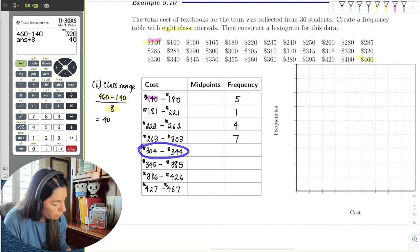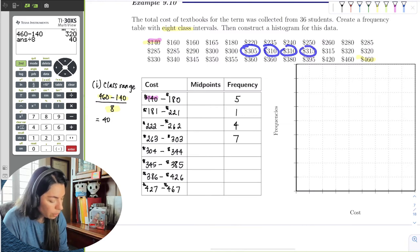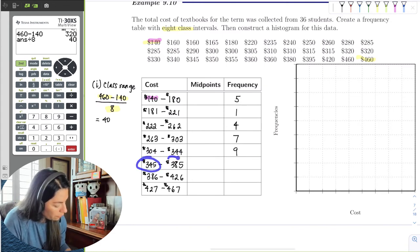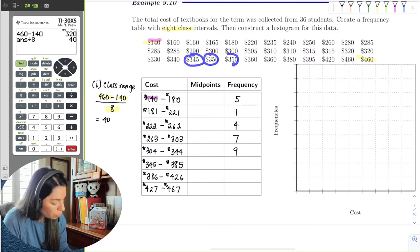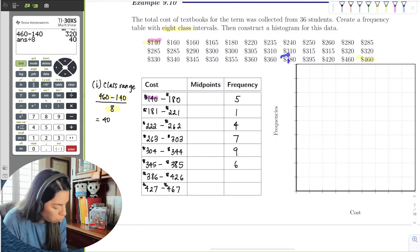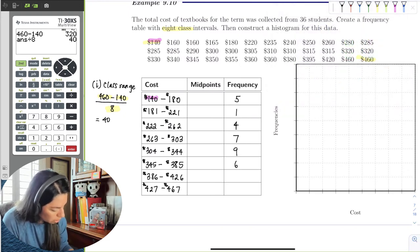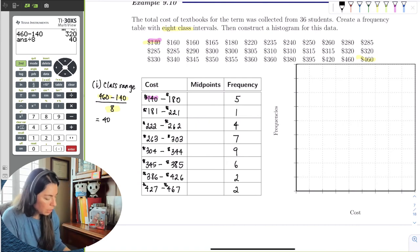Between 304 and 344, so 1, 2, 3, 4, 5, 6, 7, 8, 9. There's our peak. 345 to 385, 1, 2, 3, 4, 5, 6. And then 386 to 426, that would be 1, 2. And then 427 to 467, we can see is only 2, the 460s.